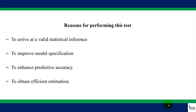Another point is that detecting serial correlation enables researchers to improve model specification. When you detect serial correlation in your model, the next thing you do is to address it. You can address it by either including the lag of the dependent variable or adding one or two variables. When you perform those operations, the model will be improved.